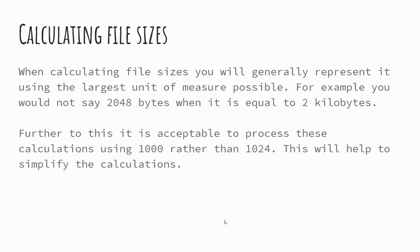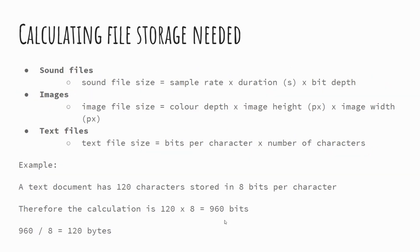When calculating file sizes, use 1000 rather than 1024 to make it far easier. Ultimately it's just multiplying values out. For sound files: sample rate × duration in seconds × bit depth. For images: colour depth × image height × width. For text files: bits per character × number of characters. Multiplying these out gives you the file size in bits, which you then convert into bytes, kilobytes, and so forth.